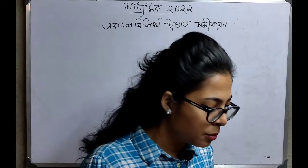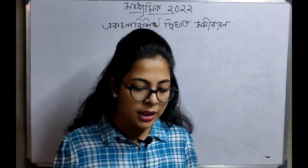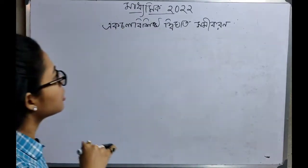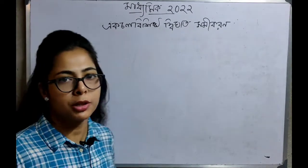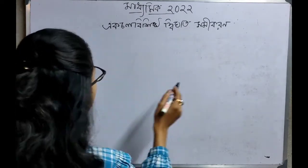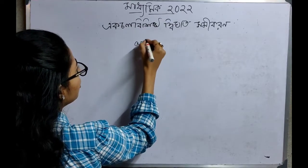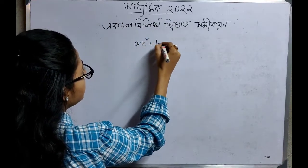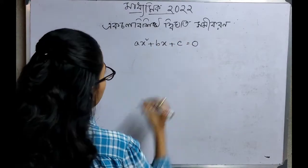The first question is: how much information is available? The general form of a quadratic equation is ax² plus bx plus c is equal to 0.